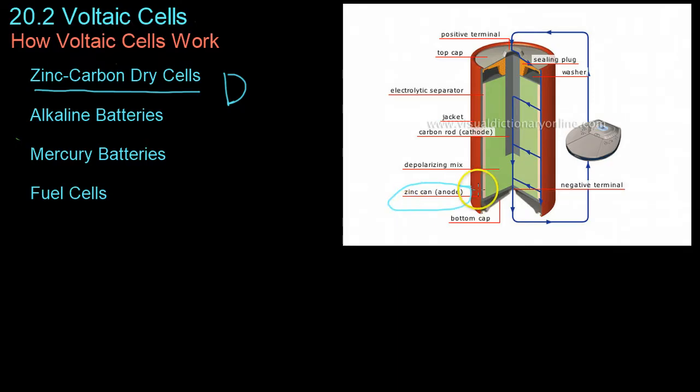The electrons flow out of this jacket, down and up into this carbon rod here. The carbon acts as the cathode. In between them is a paste.